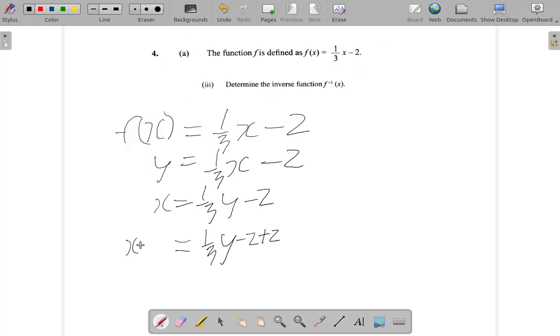And over the left hand side x plus 2. Because if you add 2 to the right, you must add 2 to the left, so that you maintain balancing the equation. So you have x plus 2 equal. Negative 2 plus 2, that's gone. So you have 1 third y.